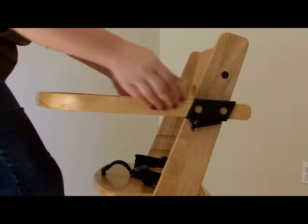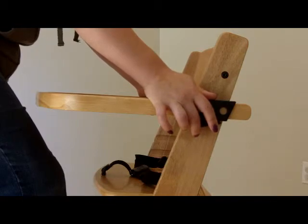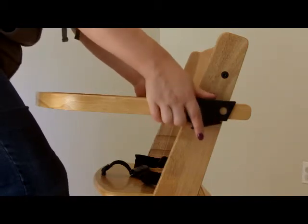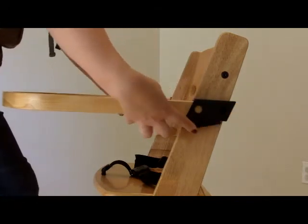To remove your tray, disengage the safety lock with your middle fingers, and then press on the levers with your two pointer fingers and pull the tray out.